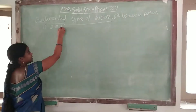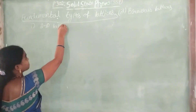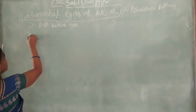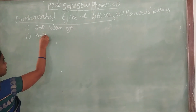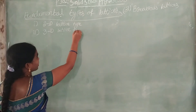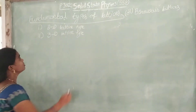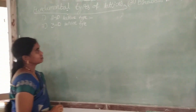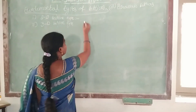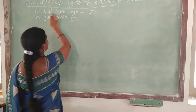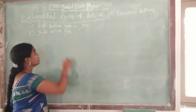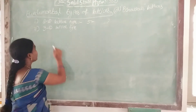The first type is two-dimensional lattice type, and the second one is three-dimensional lattices. For two-dimensional Bravais lattices, we have five different types. Five types of Bravais lattices in the case of two dimensions.